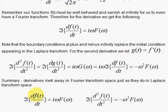The Fourier transform of the first derivative, i omega times the Fourier transform of the function. And the Fourier transform of the second derivative equals minus omega squared times the Fourier transform of the function itself.